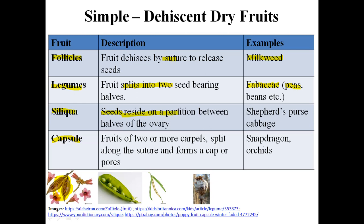In siliques, the seeds reside on a partition between the halves of the ovary. Examples are shepherd's purse and cabbage. In capsules, the fruit consists of two or more carpels and splits along sutures, forming a cap or pore. An example is snapdragon and orchids.